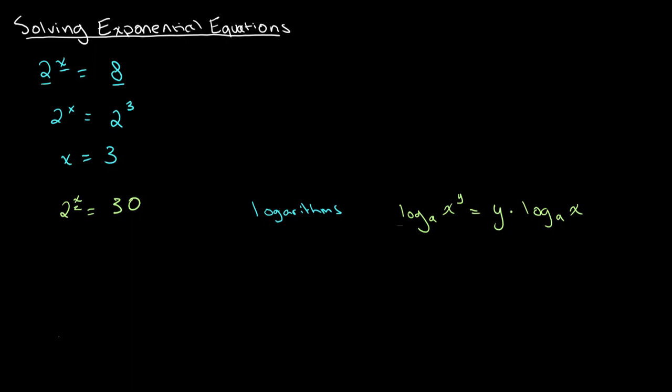So the first thing we need to do is we need to take the logarithms of both sides. And since lg is a pretty standard logarithm, so log base 10, we will just use lg. So we'll take lg of 2 to the x and this is equal to lg of 30. And we do the same thing on both sides so our equation remains the same. And now we apply the power rule that we wrote down on the right, so we can bring the x over here. So we get x times lg of 2 is equal to lg of 30.